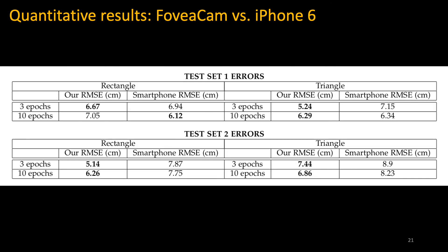Here is a quantitative comparison between FoveaCam and the iPhone 6. The top table is one test set and the bottom table is another. After fine tuning with three epochs, our camera outperforms the smartphone in every case. This supports that placing higher angular resolution onto a face improves eye tracking accuracy compared to a larger sensor.